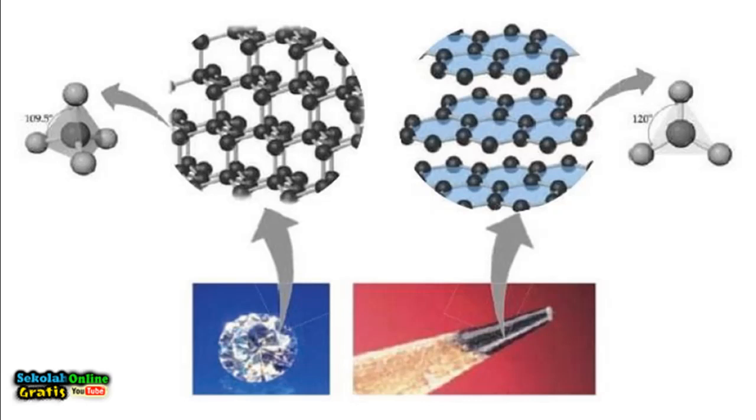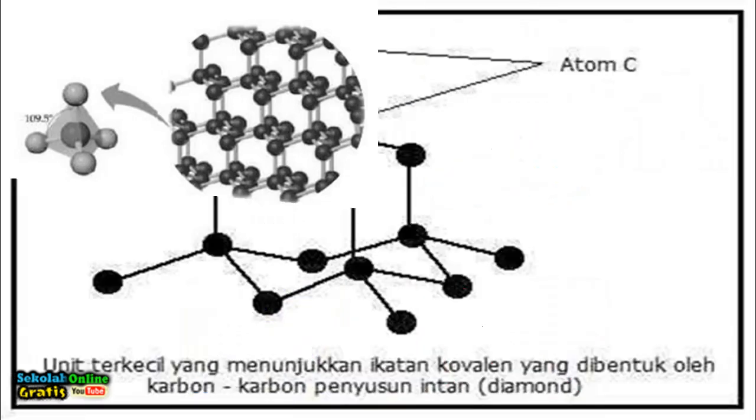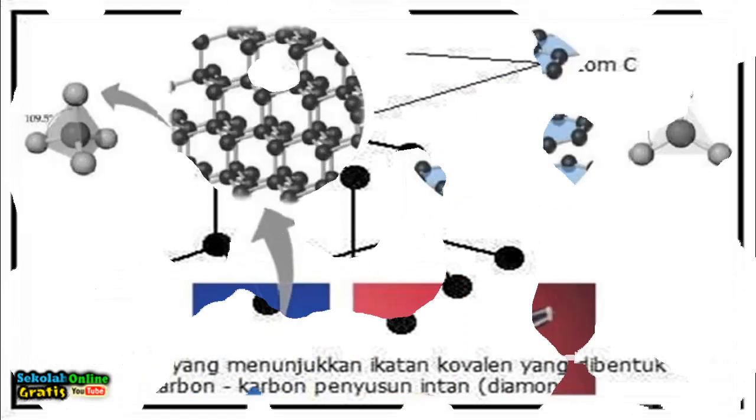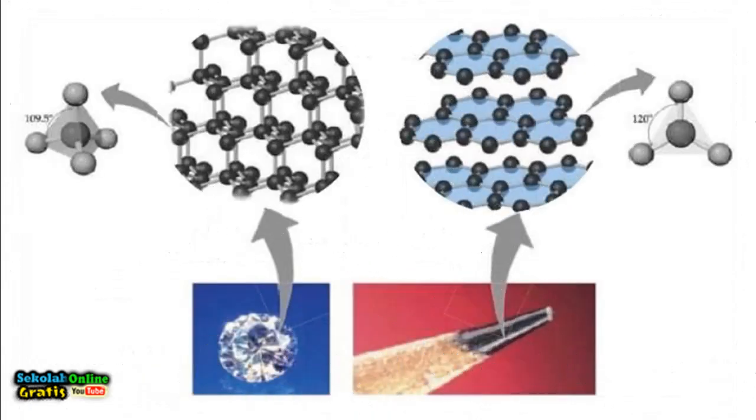In graphite C atoms bond with 3 C atoms to form a hexagonal layer or 6-plane structure. The graphite layers are held together by weak van der Waals forces making them brittle. The structure of graphite causes electrons to move easily. So graphite is good for conducting electricity and for battery electrodes. The following is the structure of diamond and graphite in a pencil.